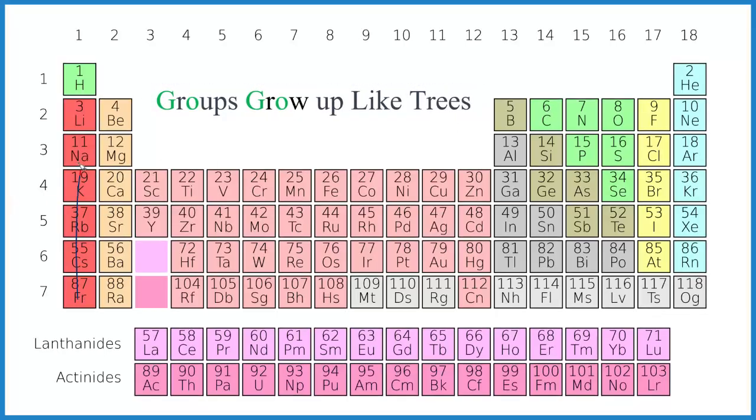So I think of groups going up like this here. If you think of it that way, groups are up and down. They're the columns on the periodic table.